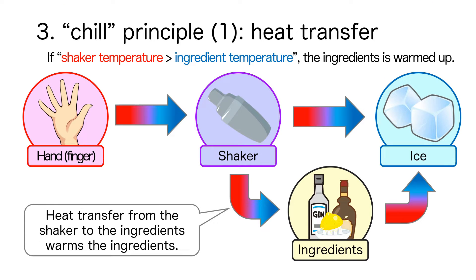The hottest shake-related object is the hand or fingers touching the shaker. Conversely, the lowest temperature is the ice. Considering the relationship between the temperature of the shaker and cocktail ingredients: if the temperature of the shaker is higher than the temperature of the cocktail ingredients, the cocktail ingredients will be warmed by the heat of the shaker.